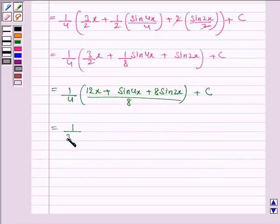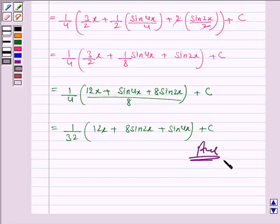This equals 1/32 times (12x plus 8sin2x plus sin4x) plus C, and this is the required value of the integral.